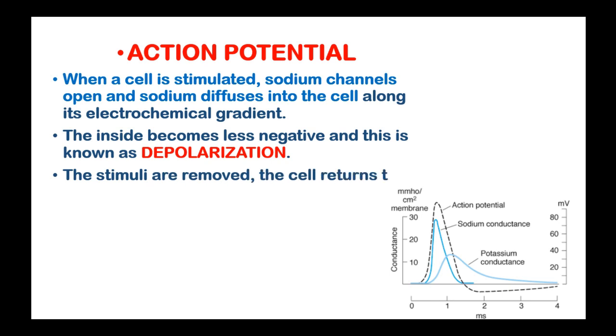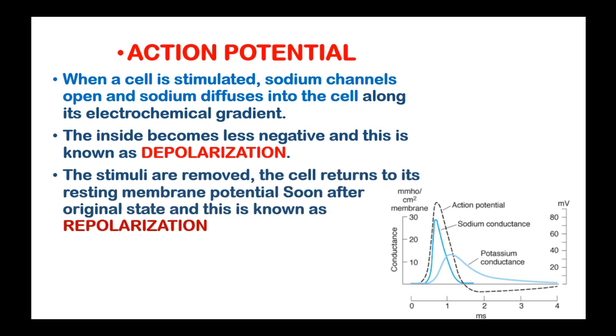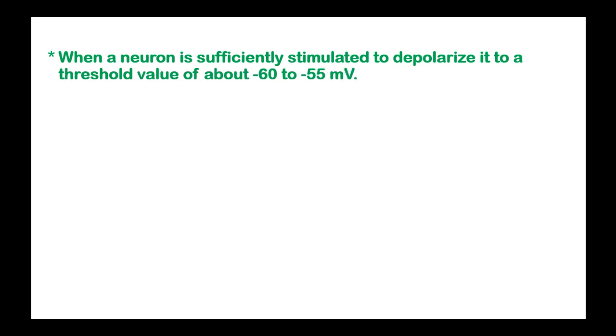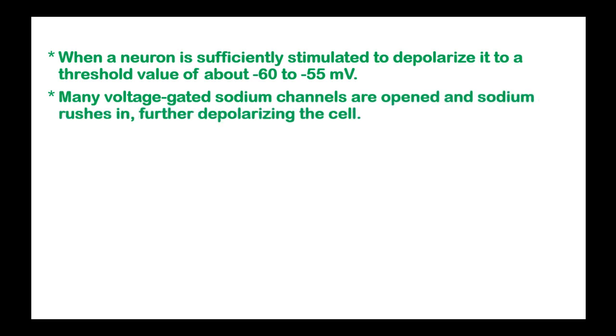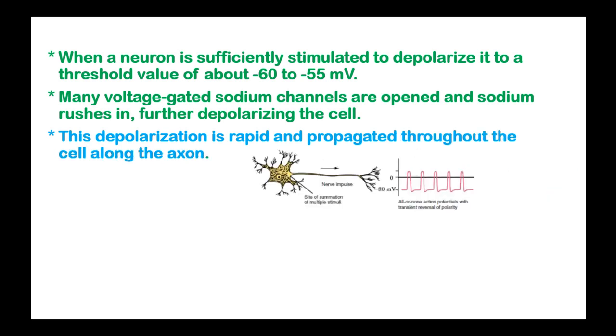When the stimulus is removed, the cell returns to its resting membrane potential, and that is known as repolarization. When a neuron is sufficiently stimulated to a threshold value of about negative 60 to negative 55 millivolts, many voltage-gated sodium channels are opened and sodium rushes in, further depolarizing the cell. This depolarization is rapid and propagated throughout the cell along the axon.